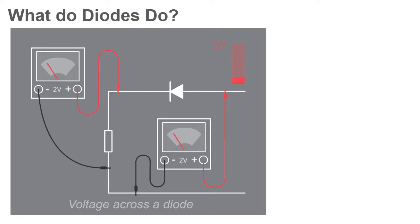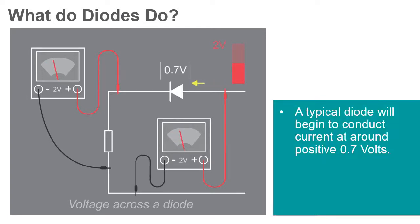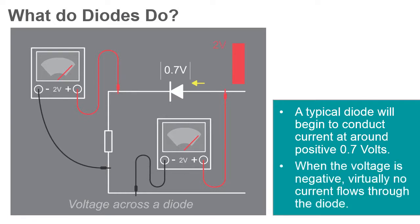Typically, the forward voltage drop is about 0.7 volts. When the voltage across the diode is positive, a lot of current can flow once the voltage becomes large enough. When the voltage across the diode is negative, virtually no current flows.